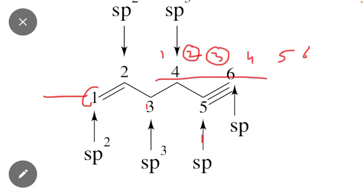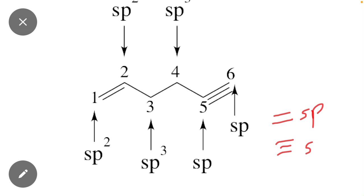Carbon one, two, three, four, five, and six—total six carbons. Keep in mind: if a double bond is present, it means sp² hybridization; if a triple bond is present, it means sp hybridization; if a single bond, then the hybridization will be sp³.